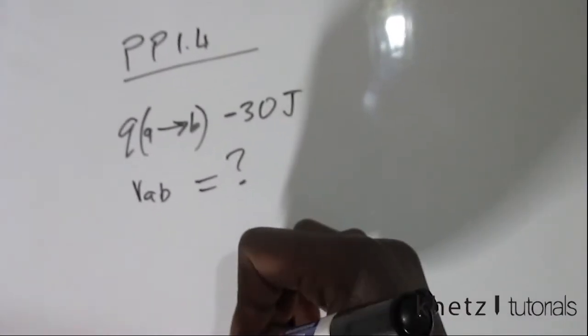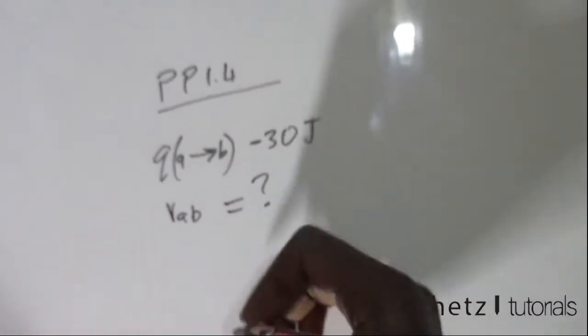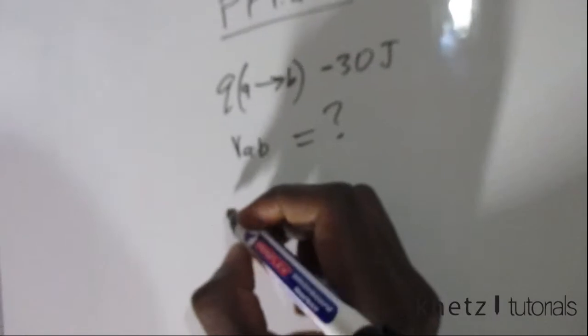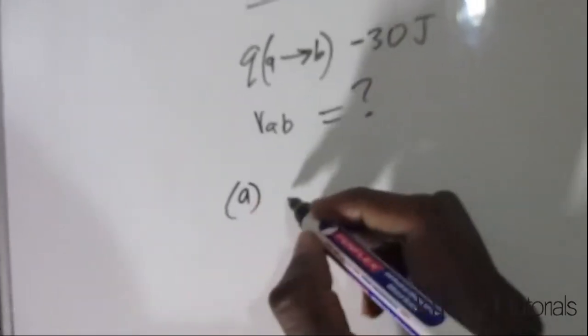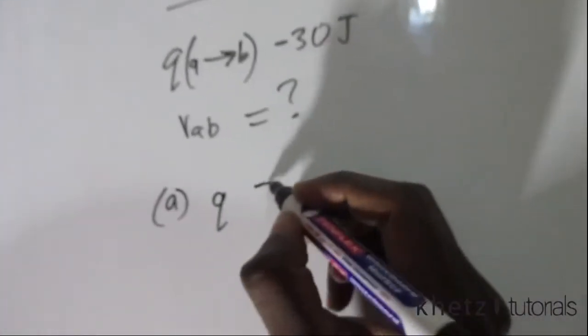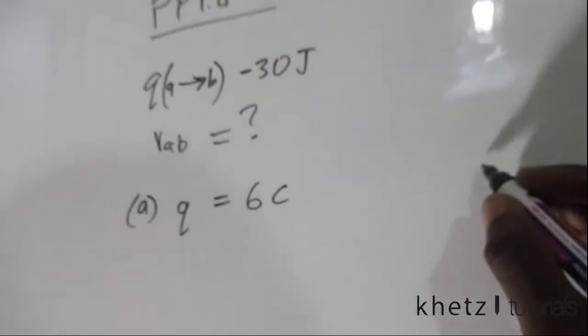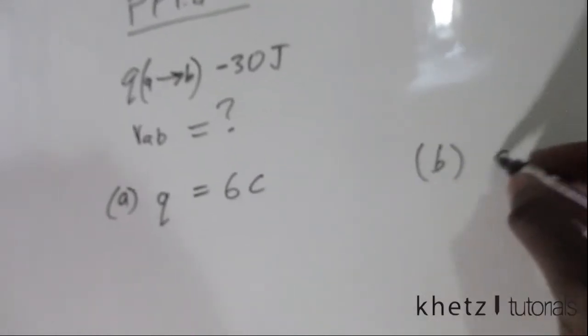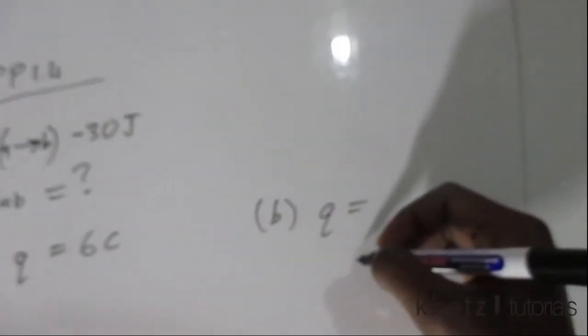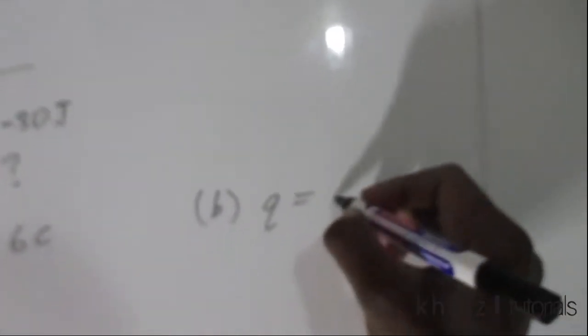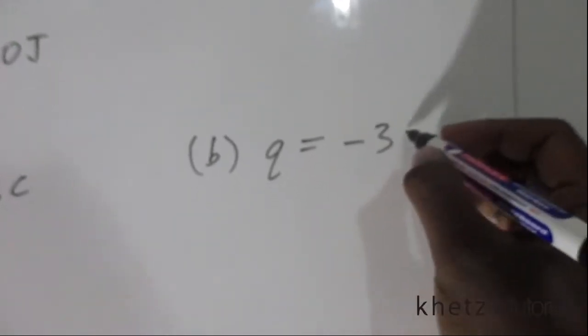Part a says if the charge, the value of the charge itself, is 6 coulombs. And in part b, the value of the charge is negative 3 coulombs.